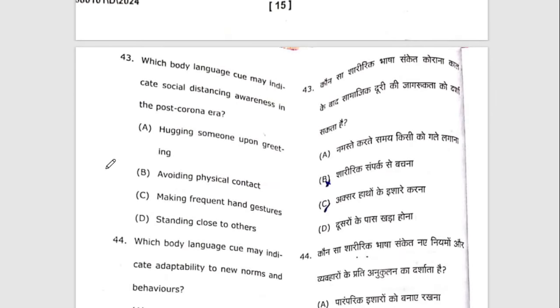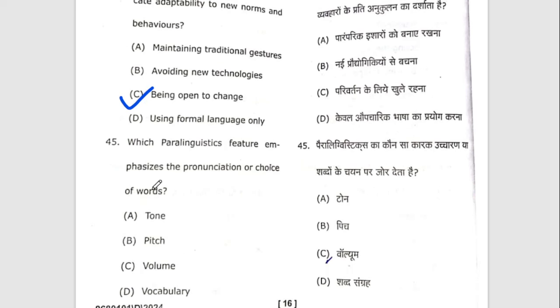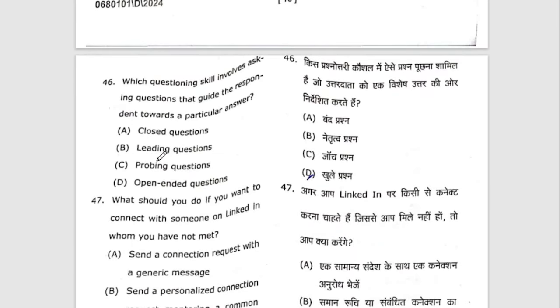Forty-third question: which body language may indicate social distancing awareness in the post-COVID era? Forty-fourth question: which body language may indicate adaptability to new norms and behaviors? The right option is A — being open to change. Forty-fifth question: which paralinguistic feature emphasizes the pronunciation or choice of word? Forty-sixth question: which questioning skill involves asking questions that guide the respondent towards a particular answer? The answer is B — leading questions.